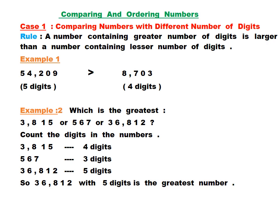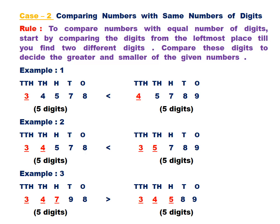I hope case one is clear to you. Now let us discuss case number two: comparing numbers with the same number of digits. The rule says if we have to compare numbers with an equal number of digits, start by comparing the digits from the leftmost place until you find two different digits, then compare those digits to decide the greater and smaller of the given numbers.